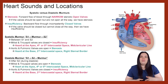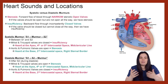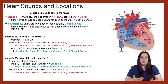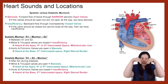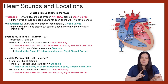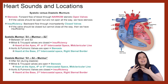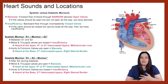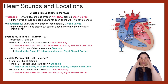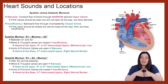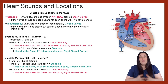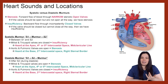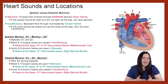Moving on to our diastolic murmur — that's a lub-dub, lub-dub, lub-dub sound heard after S2. During diastole, the heart relaxes and blood flows from the atria into the ventricles, so the mitral and tricuspid valves should be open. If you hear a murmur at the heart's apex — fourth or fifth intercostal space, mid-clavicular line — during diastole, we know there is mitral or tricuspid stenosis. If heard at the base — second intercostal space, right sternal border — then we're looking at aortic or pulmonic valve insufficiency.